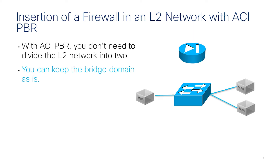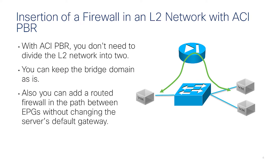With ACI you don't need to do any of that. You can keep the Bridge Domain as it is and use ServiceGraph Redirect to insert the firewall in the path between specific endpoint groups.